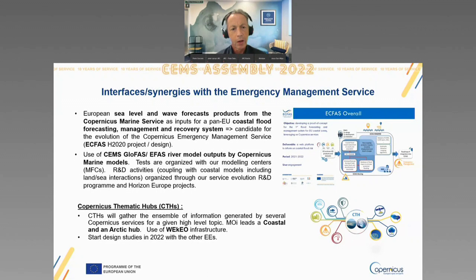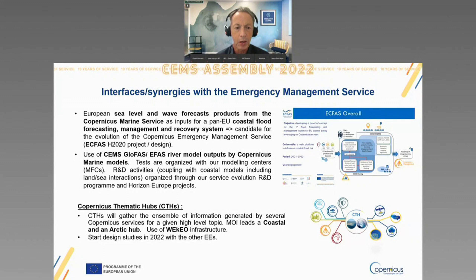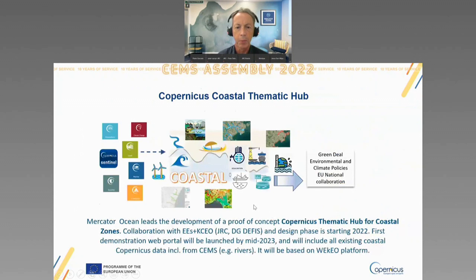Another topic of interaction between the two services is the Copernicus thematic hubs. The thematic hubs will gather the ensemble of information generated by several Copernicus services for a given topic. Mercator Ocean International leads the coastal and Arctic hub and will be using the WKO infrastructure. We are just starting design studies and will interact very soon with you, in particular for the coastal thematic hub, where there are clear links to be made with what you do at the Emergency Management Service level — how Copernicus as a whole contributes to coastal zone management, both for the marine and land with its different services and the Sentinel data sets.